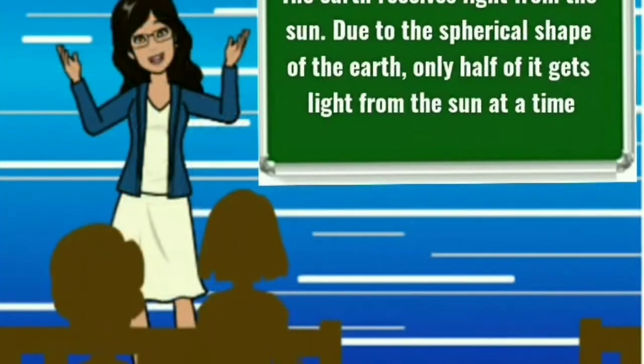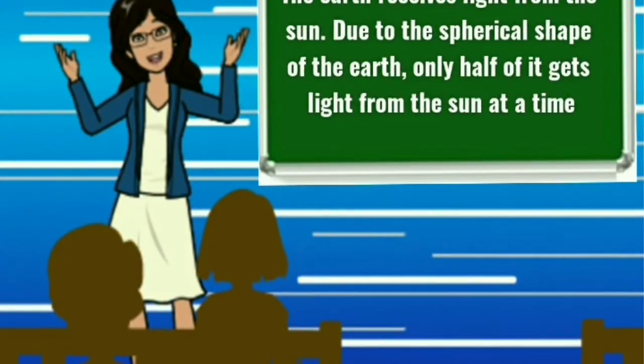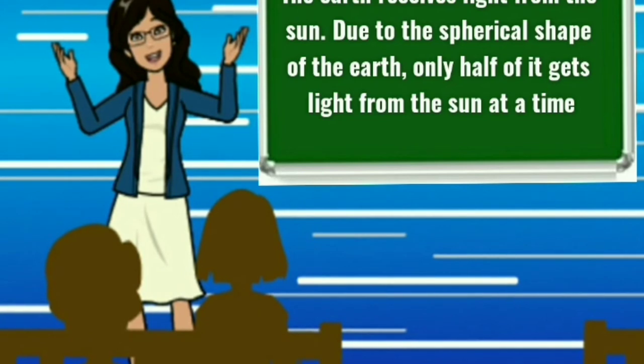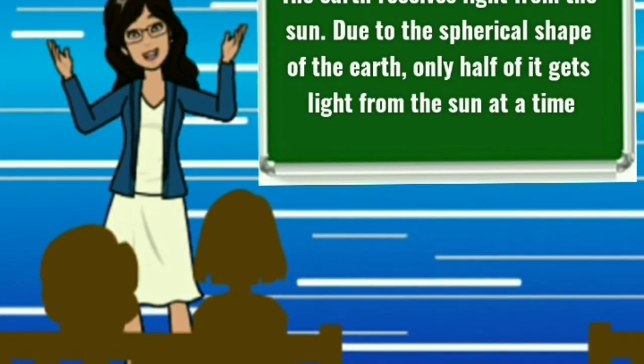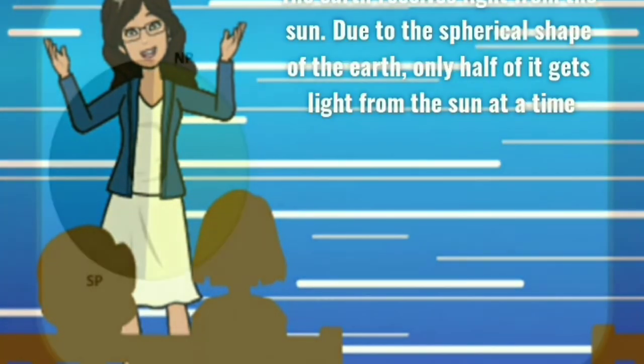The earth receives light from the sun. Due to the spherical shape of the earth, only half of it gets light from the sun at a time. And the other half remains in darkness.